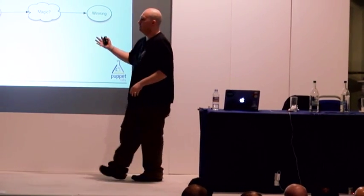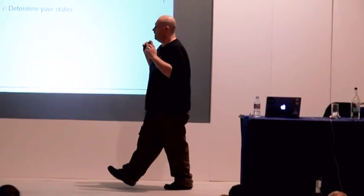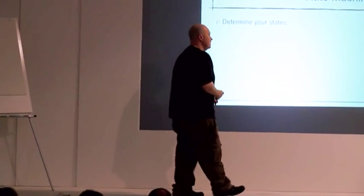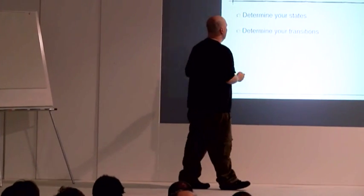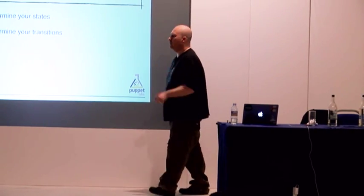For me, all orchestration can be simplified down to a finite state machine. If we're looking at something like a deployment pipeline, we start with our old application - let's say we're deploying a web app. We need to get to this winning state at the end. There's a bunch of magic, but all we're doing is transitioning from one state to another. If we're going to think of orchestration as a finite state machine, we have two jobs: first, we need to determine our states, and second, we need to determine the transitions - how we're going to move from one state to another.